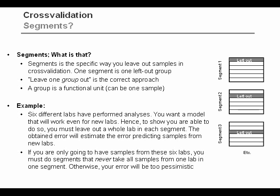Then I leave out all the samples of lab two, make a model, and fit those. The errors I get from that will reflect how well I predict data from a new lab. So I can use my cross-validation for verifying exactly that I am able to predict data from new labs.